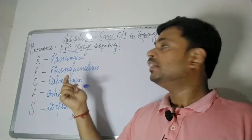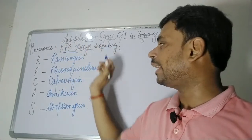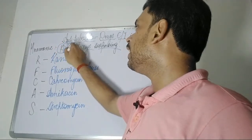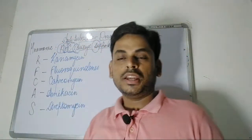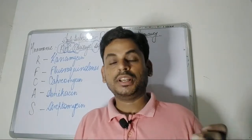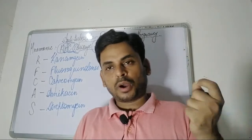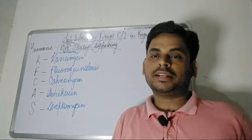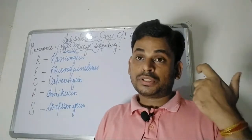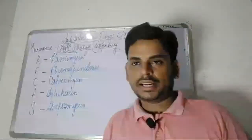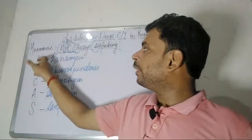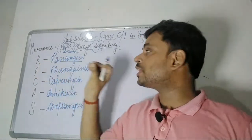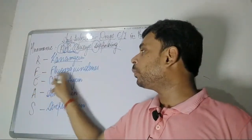Just by remembering the initials — K, F, C from 'KFC', A from 'Always', and S from 'Surprising' — you can very easily select the correct option when asked which anti-tubercular drug is contraindicated in pregnancy. The K refers to Kanamycin, and F refers to Fluoroquinolones — both contraindicated in pregnancy.